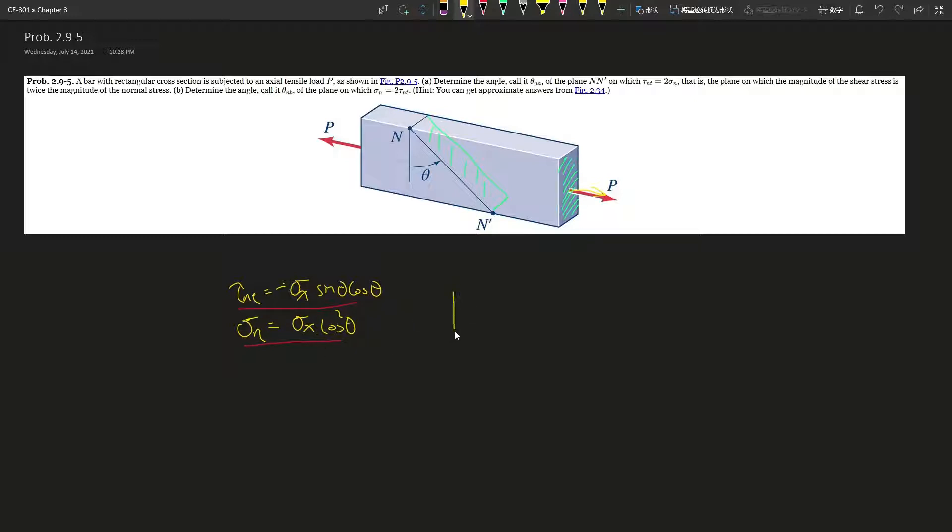So first of all is the area A. If we treat this as the perpendicular, this part as A, this would be the theta, and this would be the inclined plane over here colored in green.